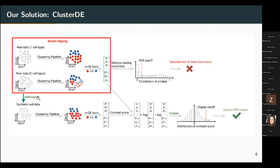Our solution is actually quite simple. We have two algorithms. The first, developed by our group, is called scDesign3. Using this algorithm, we can generate synthetic null data that resembles your real data but comes from one homogeneous group. It keeps all the mean expression levels of each marginal gene and also the gene-gene correlation structures. We then construct a contrast score, which is the log difference between your real data p-value and the synthetic null data p-value.